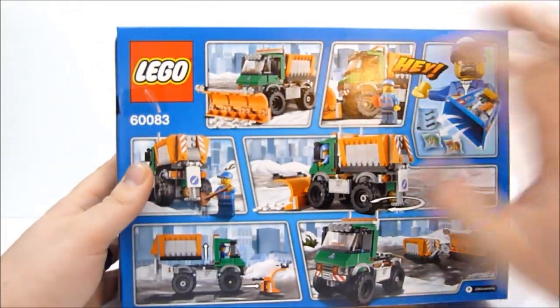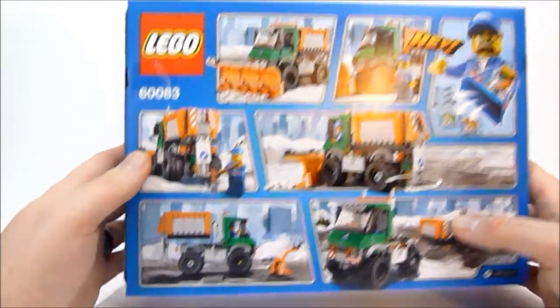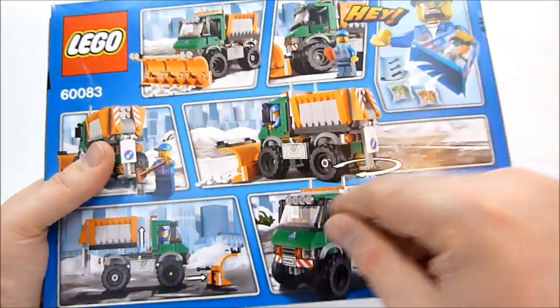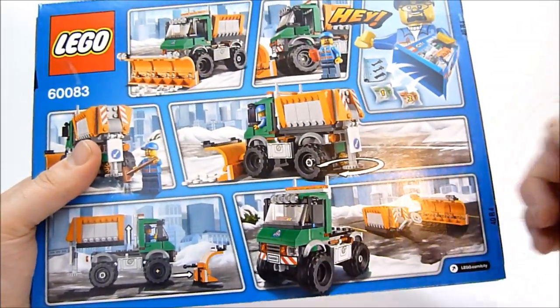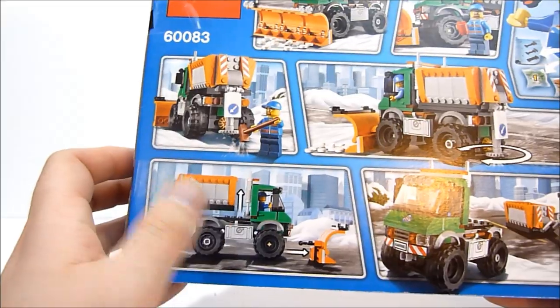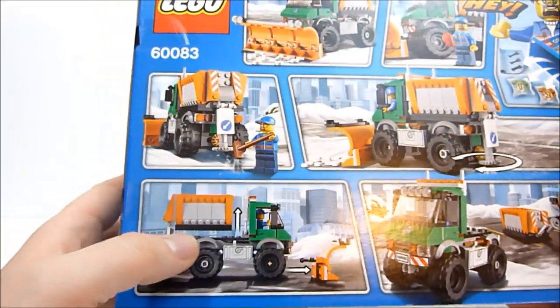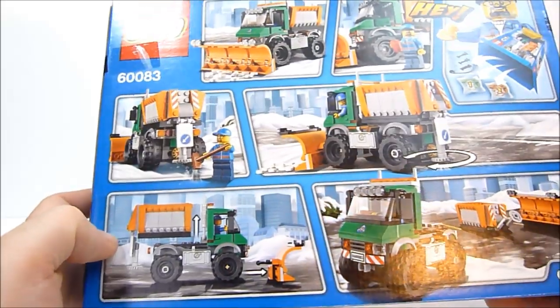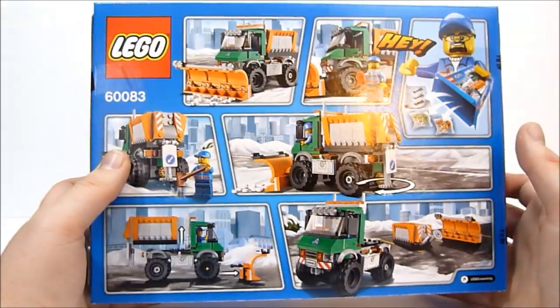Flipping it over to the back, it's got some play features. He's spreading salt on the road, very cool. I think it might actually spin as you move the truck along, which would be neat. You can take the plow and salt container off the back of the truck to have just a base truck as well.